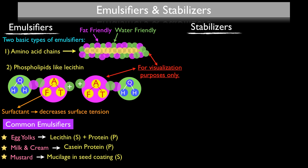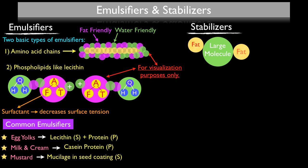Whereas emulsifiers will actually link fat and water together, stabilizers, on the other hand, will just get in the way of the dispersed phase. It's important to note that most stabilizers are water-soluble. So normally, you're going to use a stabilizer when making a fat-dispersed-into-water emulsification. These large molecules get in the way of the dispersed fat, creating a sort of barrier and not allowing the fat to come together, pool, coalesce, and break your sauce.